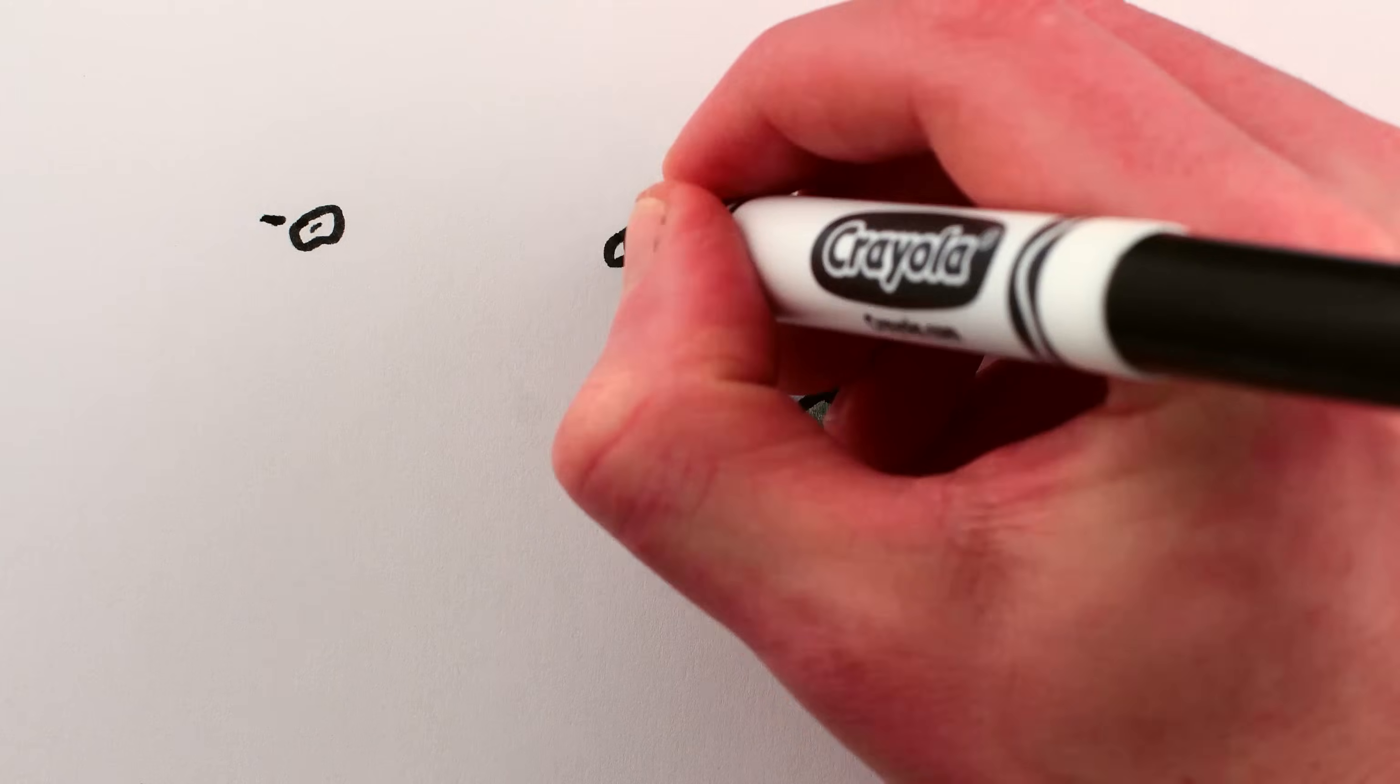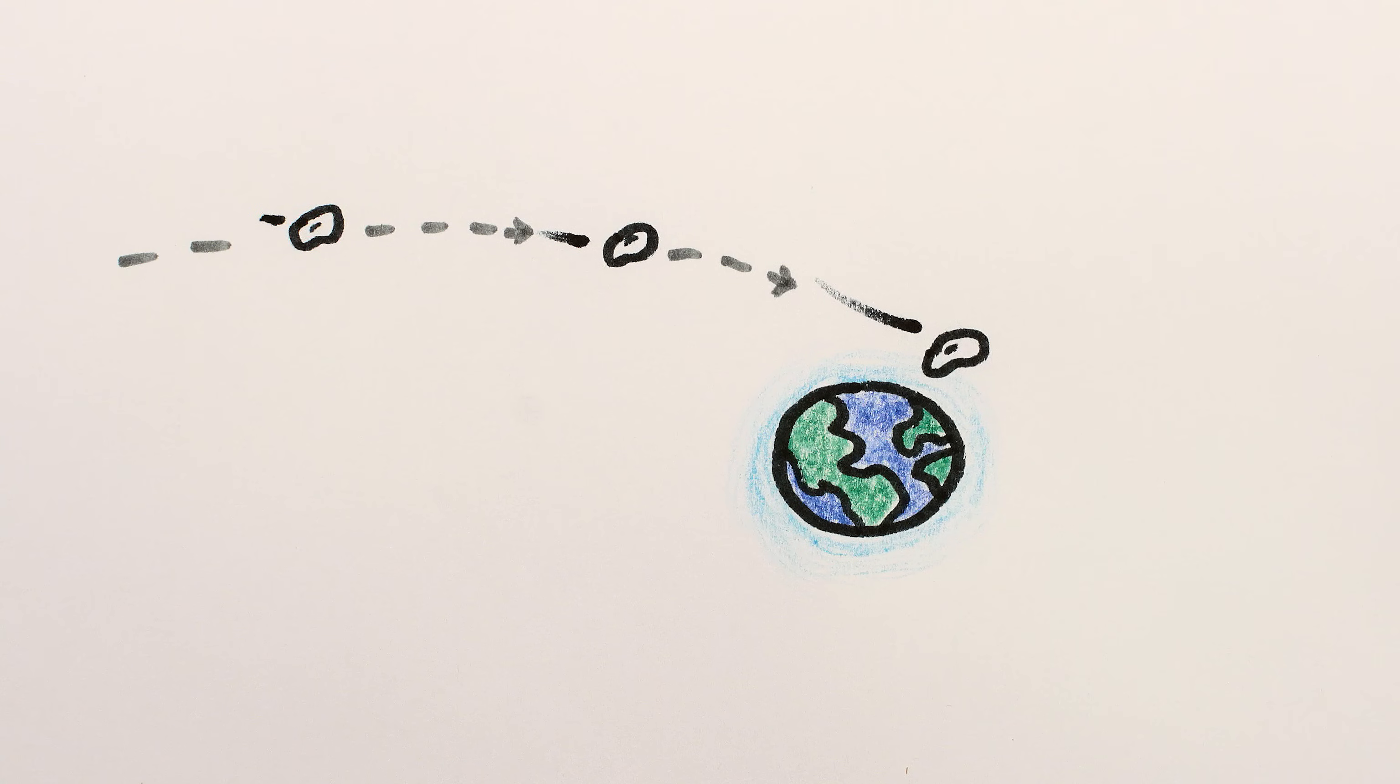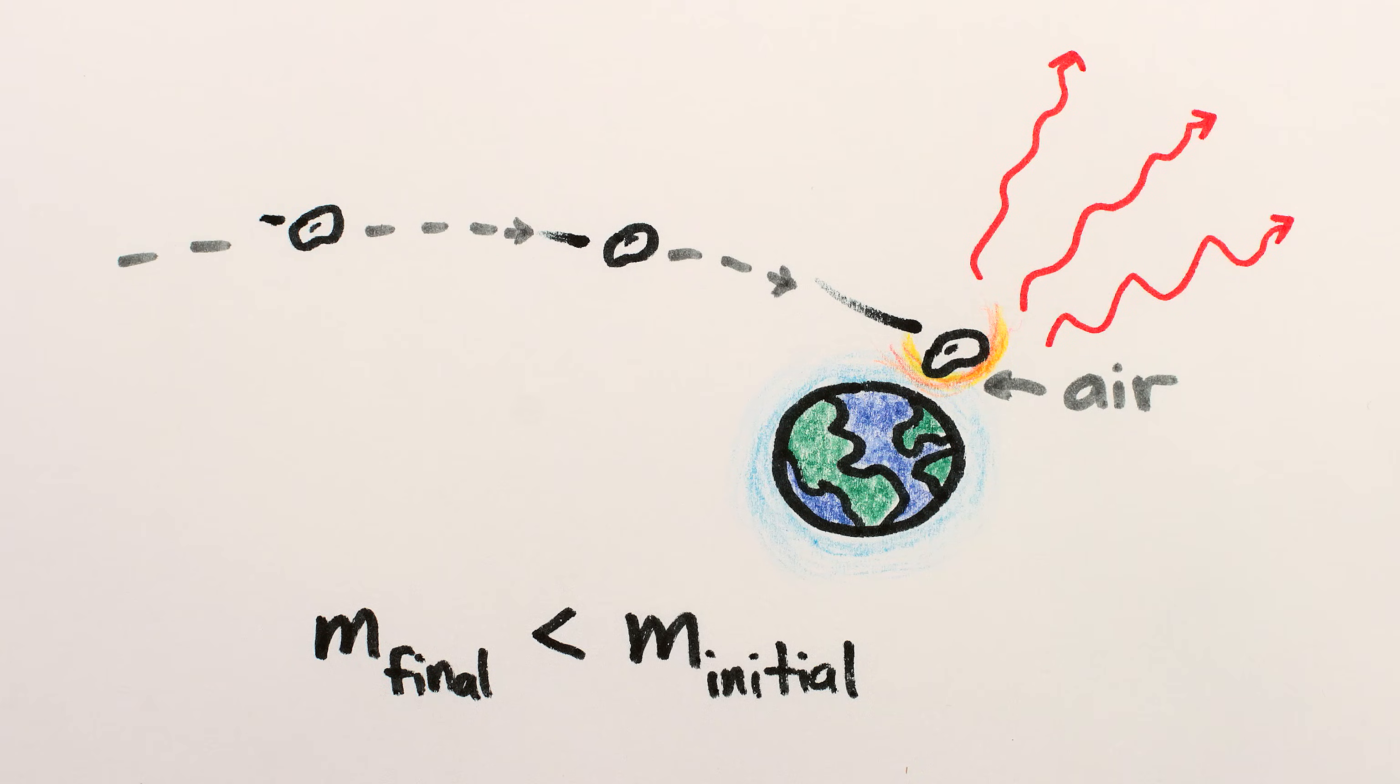Anything that falls in a gravitational field speeds up, gaining kinetic energy, and if it then crashes into something, it can convert that kinetic energy into heat. That heat can then radiate away as infrared radiation, slightly decreasing the mass of the object.